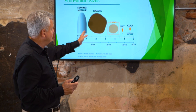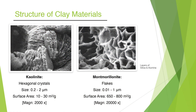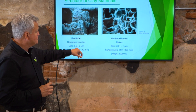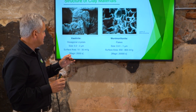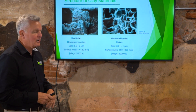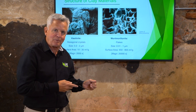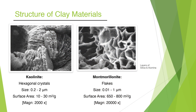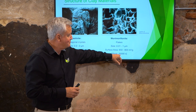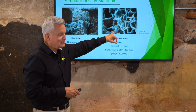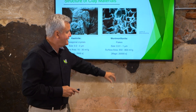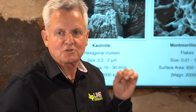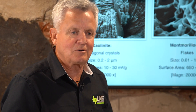A human hair is about 100 microns. There are two different types of clays shown here: kaolinite on the left, magnified 2,000 times, with particles ranging from 0.2 to 2 microns and a surface area up to 30 square meters. Another common type is montmorillonite — the largest flake is about one micron, magnified 20,000 times, and it can have a surface area up to 800 square meters per gram.